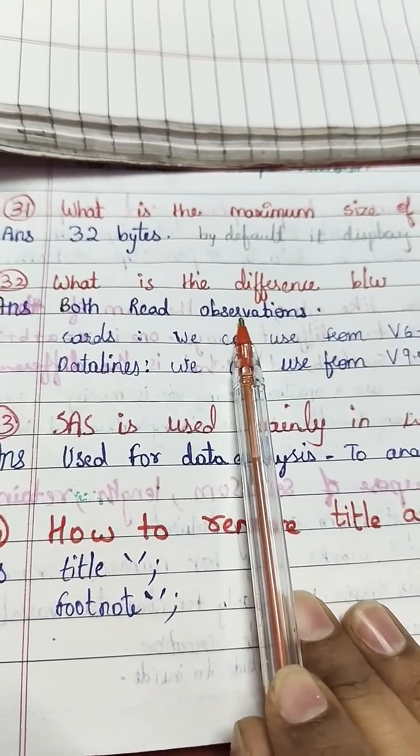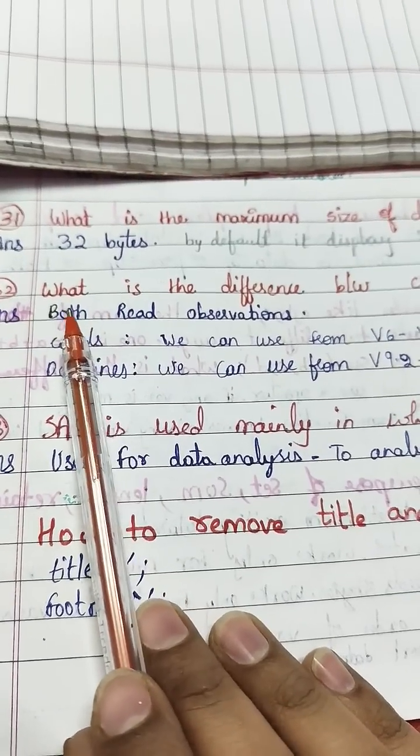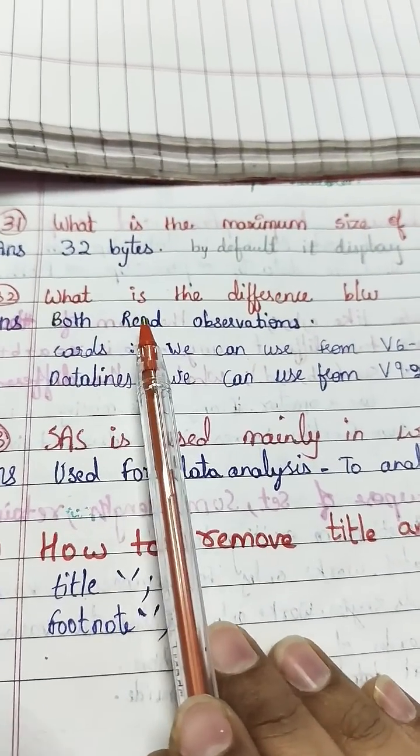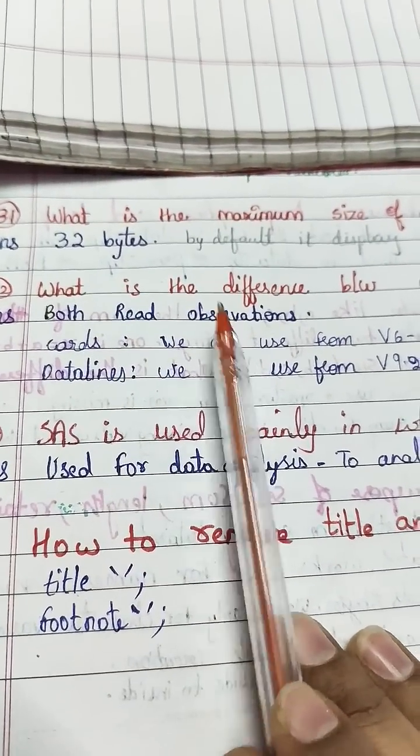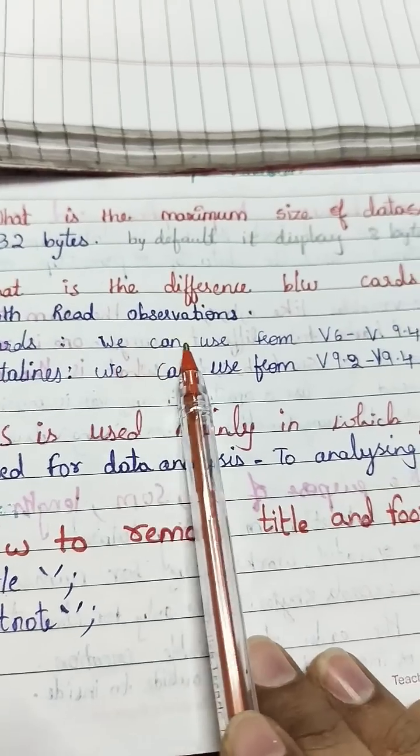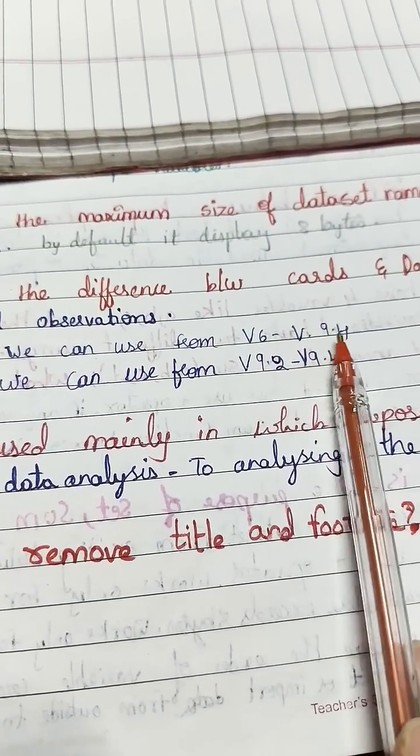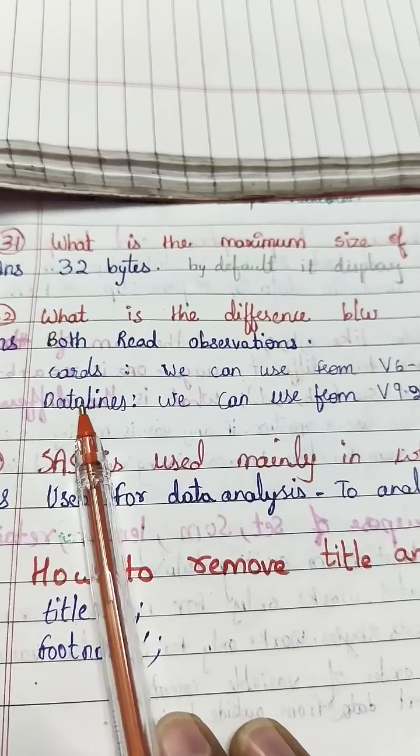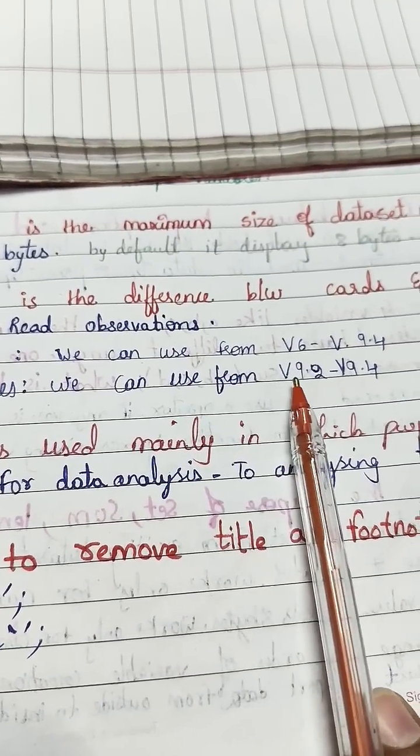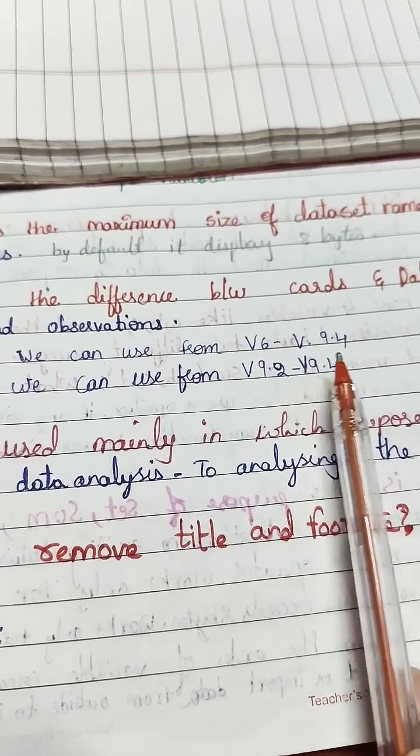Cards and data lines are both the same—they both read observations. Cards can be used from version 6 to version 9.4, and data lines can be used from version 9.2 to 9.4.